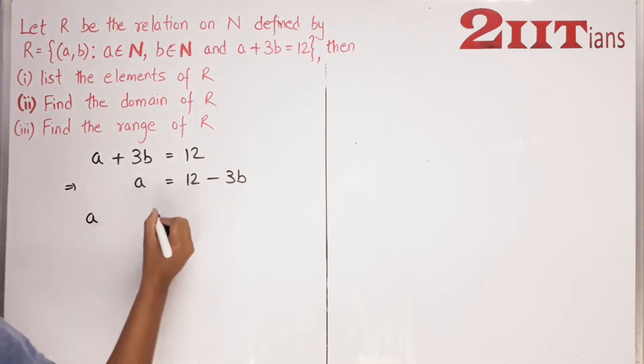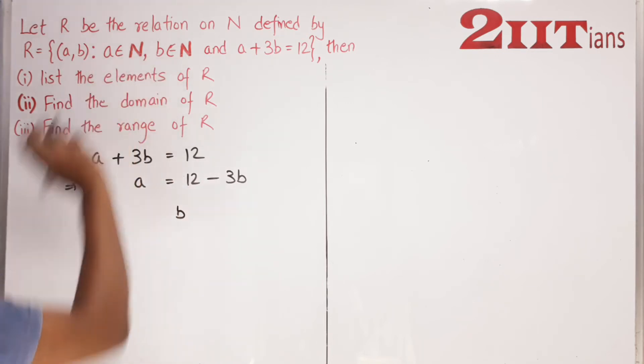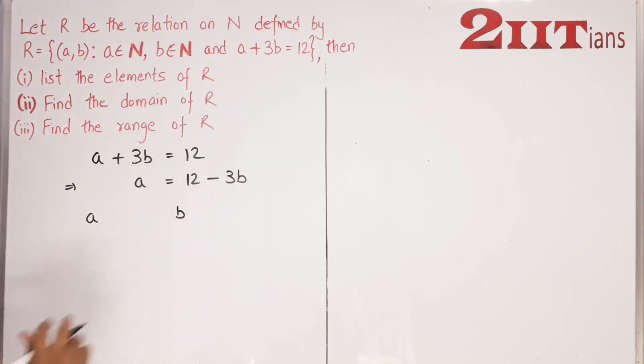Now if A is something and B is something, then A becomes 12-3B. Since both are natural numbers, we start with B. Let's take B's value as 1.